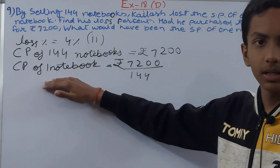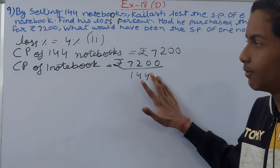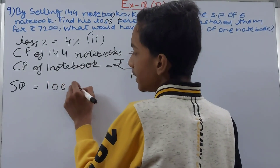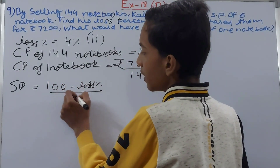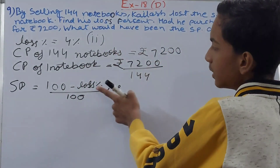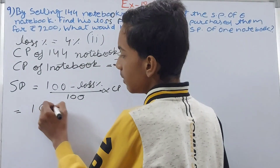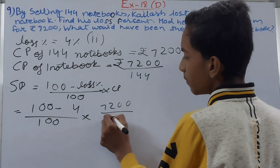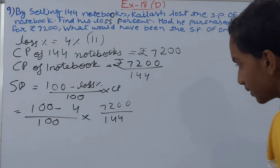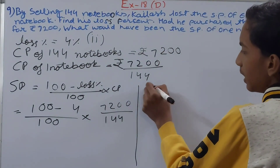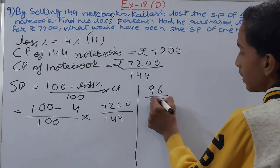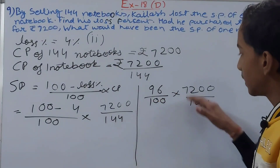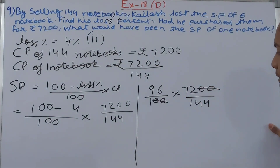We know the CP of one notebook = 7200/144, and we know the loss percent is 4%. Using the formula: SP = [(100 − Loss%) / 100] × CP. So SP = [(100 − 4) / 100] × (7200/144) = [96/100] × (7200/144).